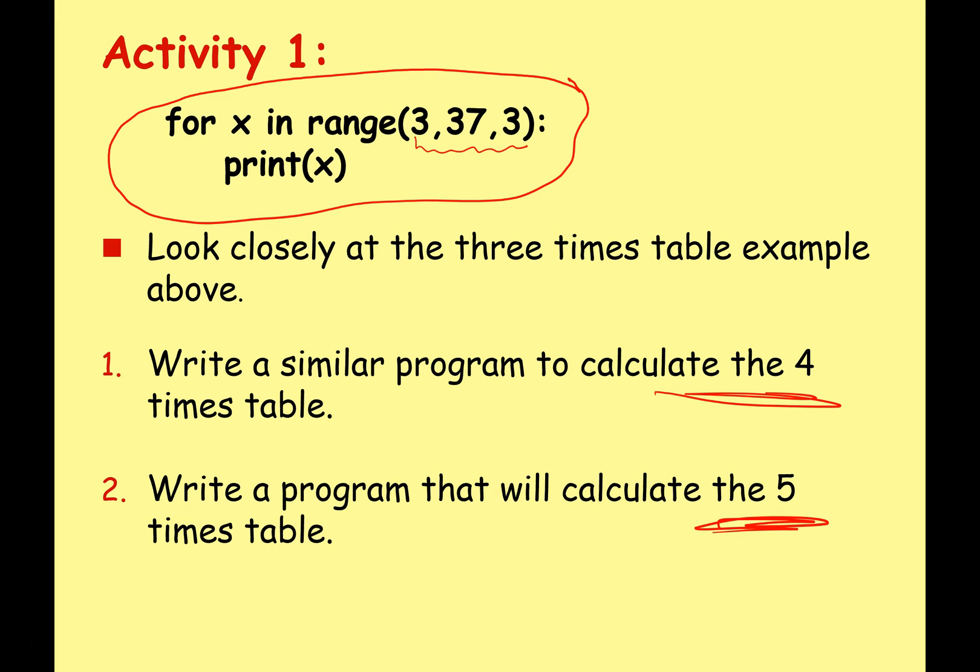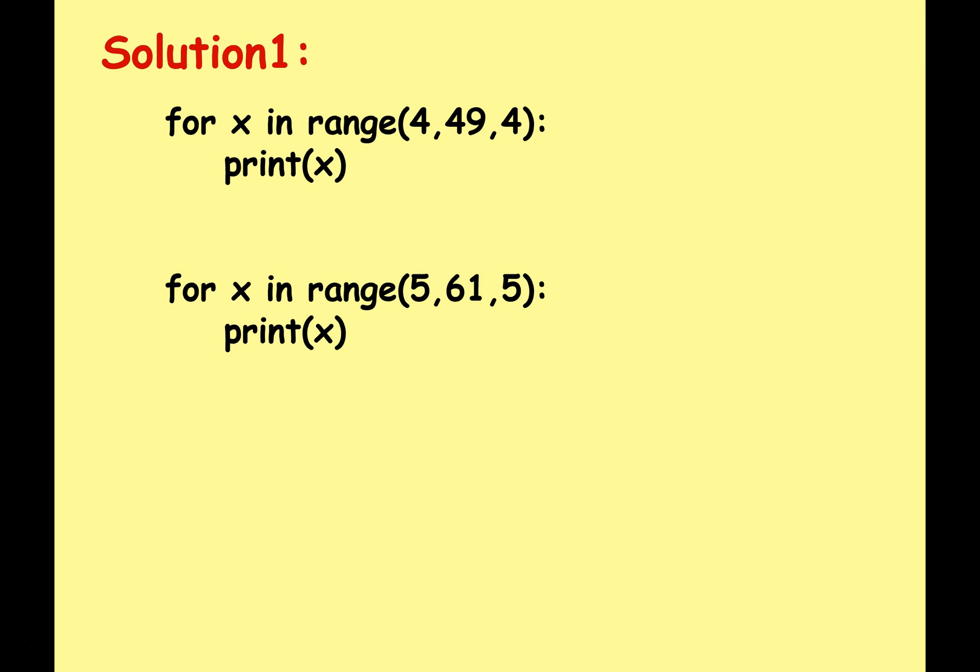The first one, pretty easy. For x in range, start at 4, keep going until it gets to 49 in steps of 4. So again that'll do 4, 8, 12, etc. 48 will be the last number it prints because when it gets greater than 48 it exits the program.